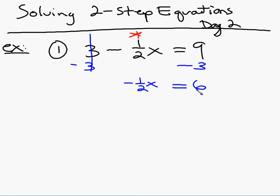And now that you've made it that far, it looks just like our other problems where we multiply by the reciprocal. So I'm going to multiply both sides by negative two over one, the reciprocal, negative two over one times both sides.